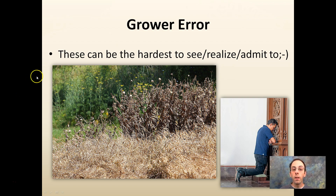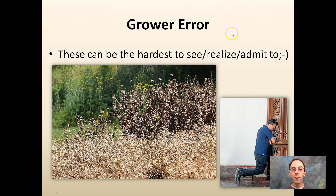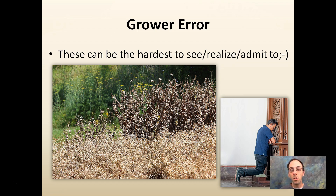The last one is grower error — this can be the hardest to see, realize, or admit to. Here it looks like a grower may have applied an herbicide where they shouldn't have. Growers rightfully don't want to admit to something they may have done, but by looking at the data and collecting it, the key part is to realize what you did and not do that again.